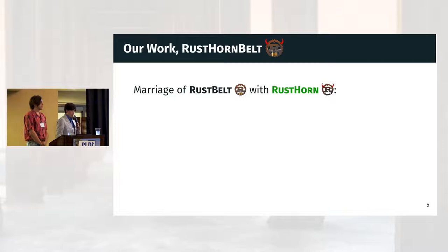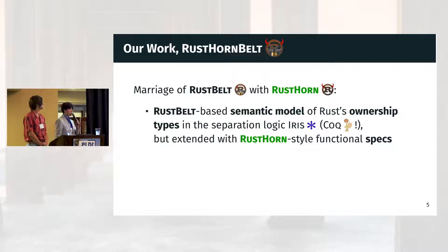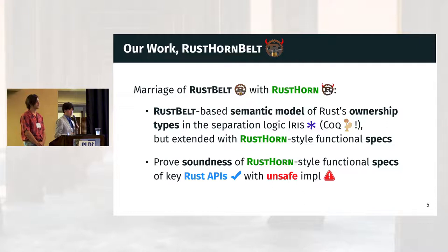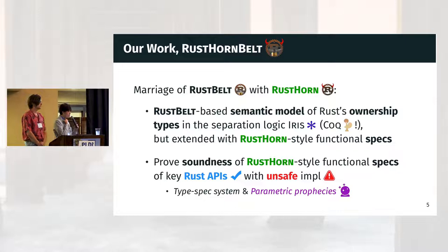In summary, our work RustHornBelt is a marriage of RustBelt with RustHorn. It provides a RustBelt-based semantic model of Rust ownership types in the separation logic Iris, fully mechanized in Coq, but the model is extended with RustHorn-style functional specifications for functional correctness. Using that, we proved soundness of RustHorn-style specs of various key Rust APIs, like Vec and Mutex, with implementation in unsafe code. For that, we used the type-spec system and the framework of parametric prophecies, which are explained towards the end of the talk.